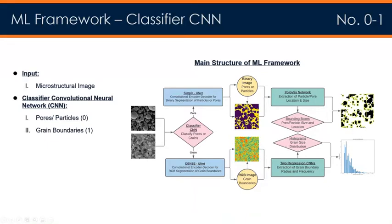This figure shows the main architecture of the developed machine learning framework. The first algorithm implemented is a classifier convolutional neural network, which takes a given initial microstructure image and classifies the type of defects present. This is critical for establishing autonomy — given a data collection of various microstructural defect types, no prior information is needed from the user. Depending on the defect type recognized, the network routes to one of two paths: the top path for pores or particles, and the bottom path for grain boundaries.